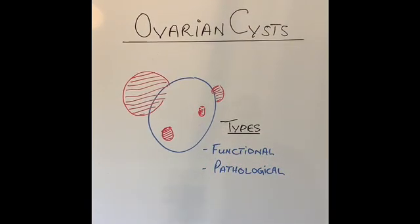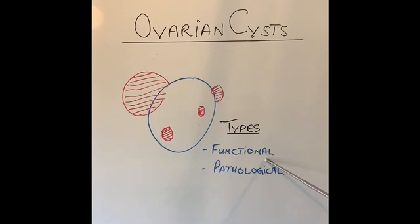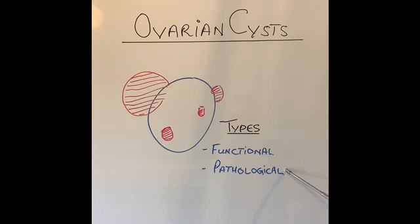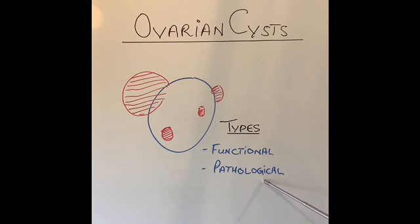Ovarian cysts can happen on one side or both sides simultaneously. They are divided into two main varieties. The first, and extremely common type, is the functional ovarian cyst, which results from hormone changes during the menstrual cycle and only occurs in pre-menopausal women. The second variety is pathological ovarian cysts, which result from abnormal tissue growth and can occur both before and after menopause. Some of these can be cancerous.